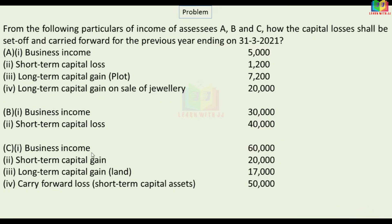Assessee C has business income, short-term capital gain, long-term capital gain on land sale, and a carry-forward loss on short-term capital asset.